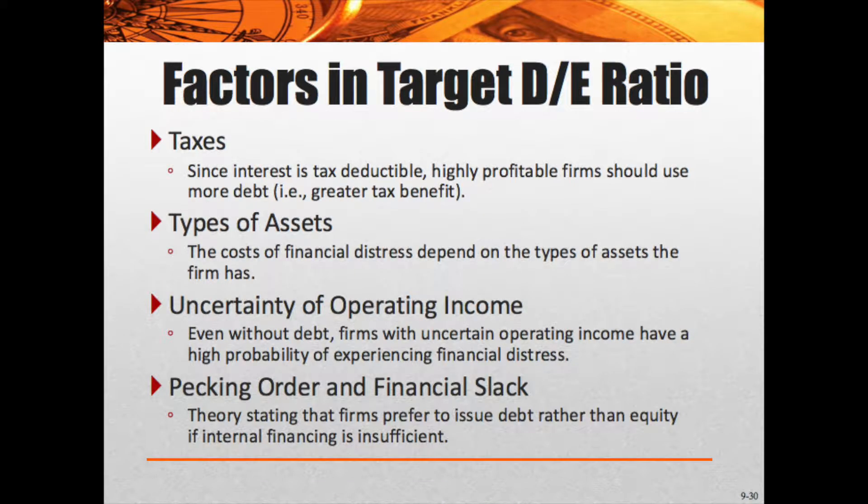Factors in the target debt-to-equity ratio include taxes — interest is tax deductible, so highly profitable firms should use more debt to reduce taxes, though often they use internal financing because they're so profitable. Types of assets also matter: the cost of financial distress depends on the asset type. If you have lots of heavy physical assets with a lot of debt on them, you can be in deeper trouble — compare an insurance company with just offices and computers to a railroad or an aircraft manufacturing company.